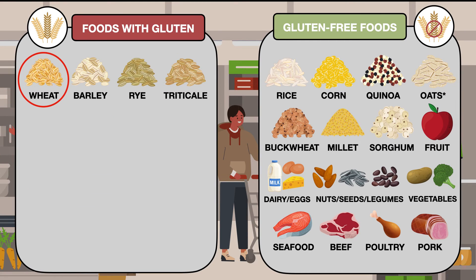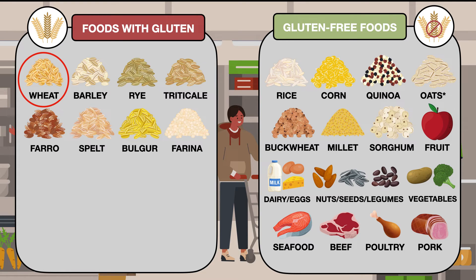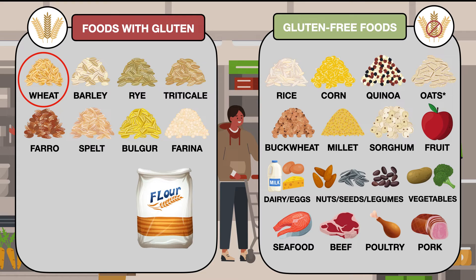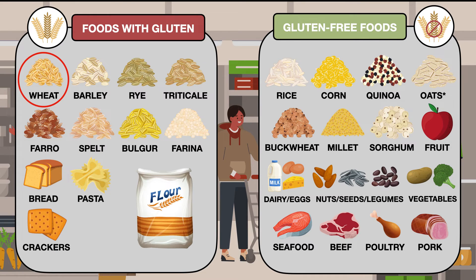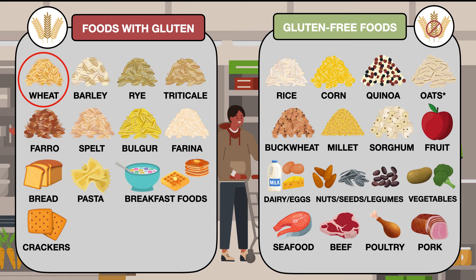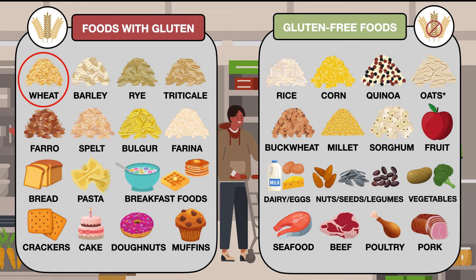Foods that are actually wheat include farro, spelt, bulgur, and farina. Wheat is also turned into flour to make foods like bread, pasta, and crackers, breakfast foods like cereal, pancakes, and waffles, and baked goods like cake, donuts, and muffins.